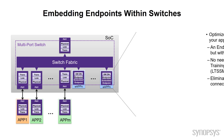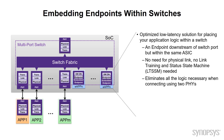Let's look at a couple of the features of the embedded endpoint. It's really an optimized low-latency solution for placing your application logic within the switch and within your SOC. It's an endpoint downstream of a switch port, but within the same ASIC. The nice thing about the embedded endpoint is there's no need for a physical link at all. Not only do you get rid of the physical link and the PHYs, but you get rid of the link training and status state machines as well — it's a lot of logic you don't need. We eliminate all this redundant logic, and implement this in such a way that we completely support the PCI Express hierarchy, and it's transparent to the host.